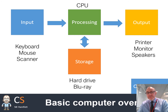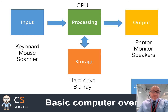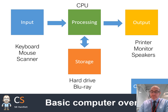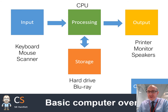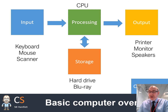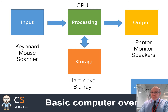Here are some example devices. For input, you might have a keyboard, a mouse, or a scanner. You may also have things like a webcam or a microphone. Processing is always a CPU — there's no other processing device, though technically you could say a graphics card, but let's just focus on CPU for now. For output, you've got things like your monitor, printers and speakers — anything where information comes out of the computer.